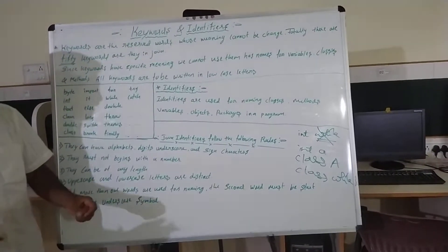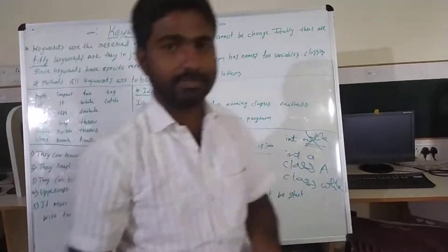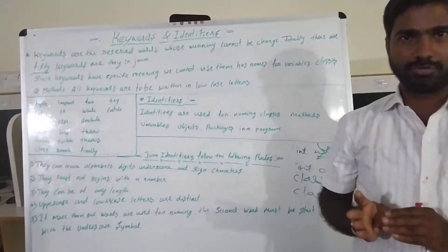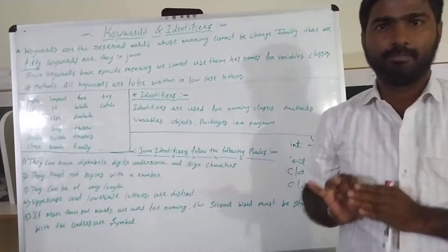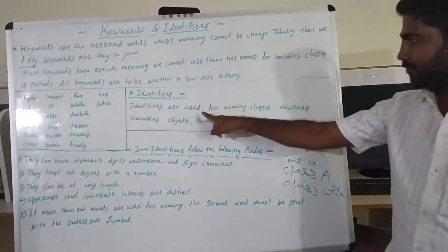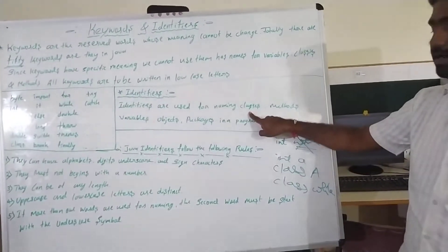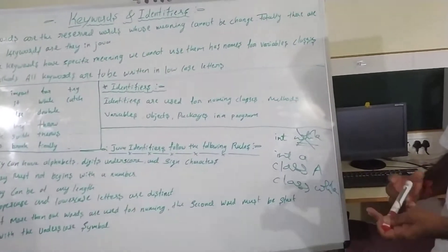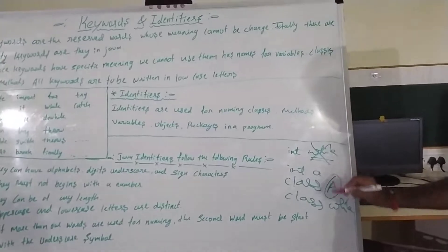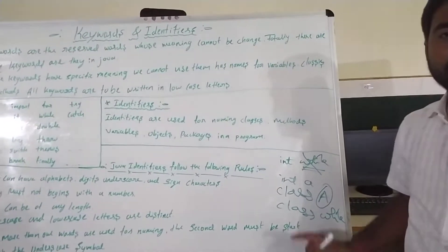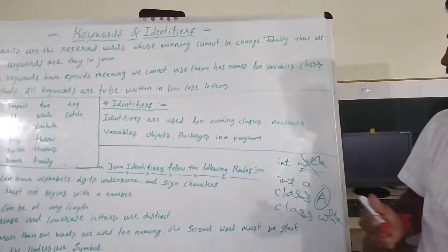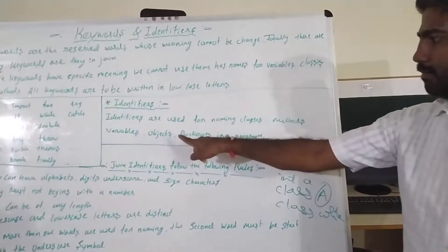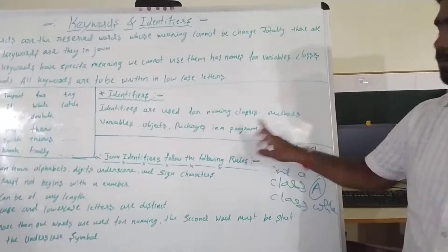Next topic: Identifiers. Identifiers are used for naming classes, methods, variables, objects, and packages in a program.